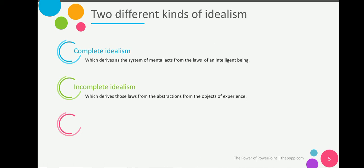Incomplete idealism derives its laws from the abstraction from the objects of experience. It gives something partial or a formal explanation of the object and tacitly possesses the existence of the matter of the thing in itself.